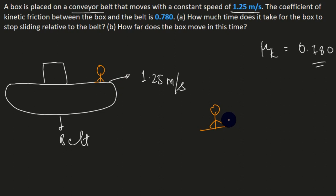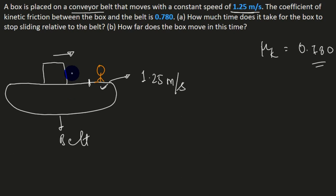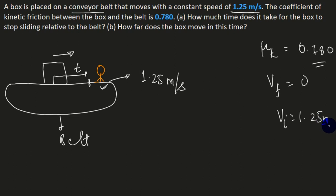In part (a), we work from an inertial frame on the belt. When the box is placed on the belt, it initially slips and then comes to rest relative to the belt. Initial velocity relative to belt is 1.25 m/s, final velocity is 0. During slipping, kinetic friction acts opposite to motion. Applying Newton's second law in x-direction: −F_k = ma, and since F_k = μ_k mg, we get a = −μ_k g. The negative sign confirms deceleration.